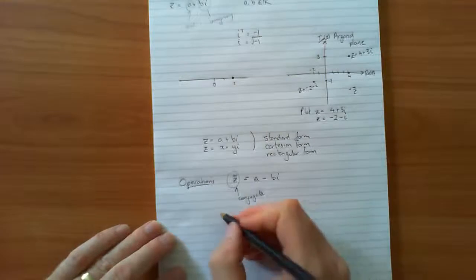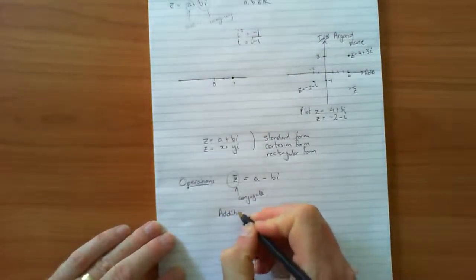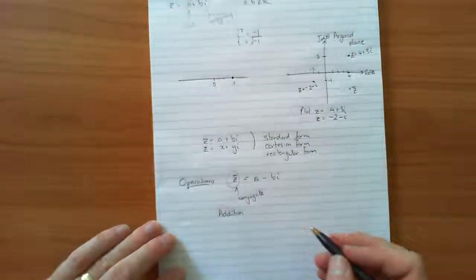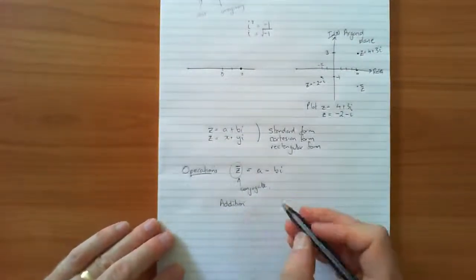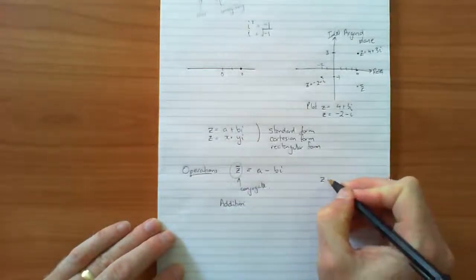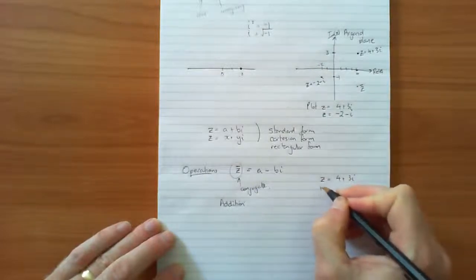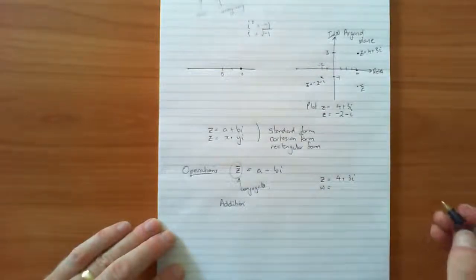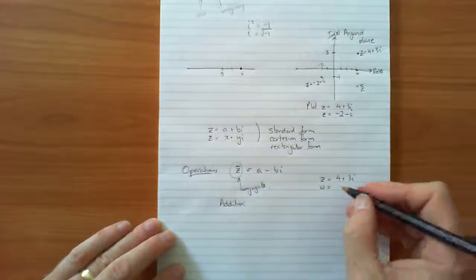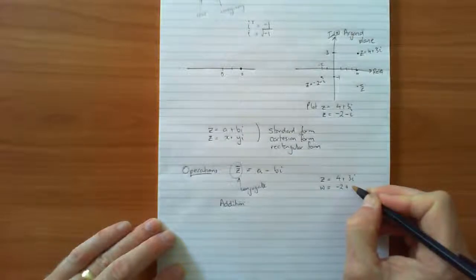The next one that we want to look at is addition of complex numbers, and rather than give you the actual mathematical rules, I thought maybe we do just a couple of examples. So for all these examples, let's call Z equals 4 plus 3i, we've already done that, and let's say w, another complex number, might be equal to negative 2 plus 2i.